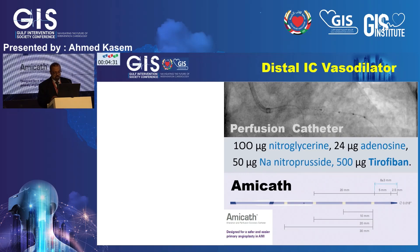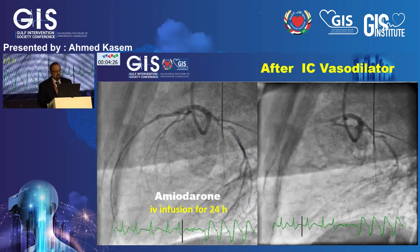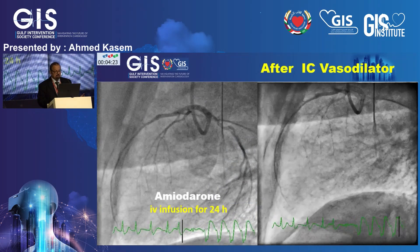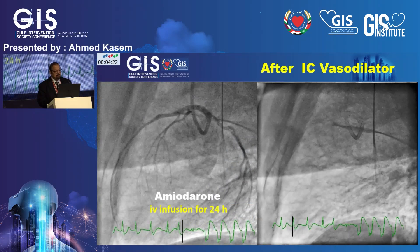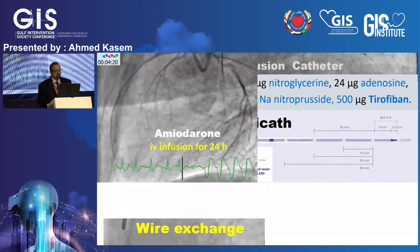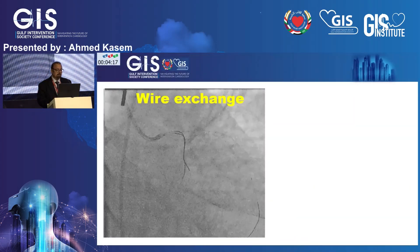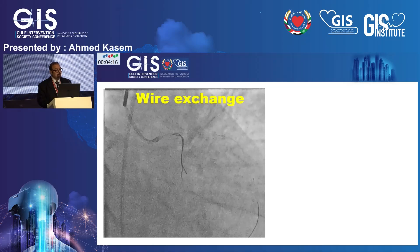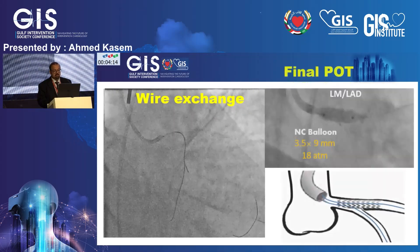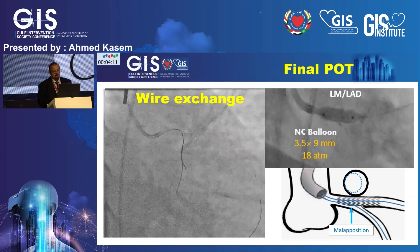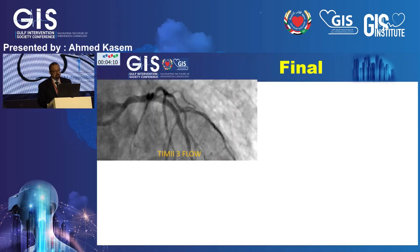I repeated the injection of intracoronary medication through the perfusion catheter. With the patient still having some PVCs and short runs of VTAC, I started an amiodarone infusion for 24 hours. Finally, I made a third wire crossing to the left main, then performed a final post-dilation with a 3.5×9 mm balloon at 18 atmospheres.